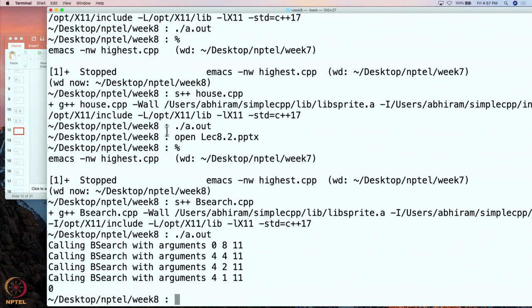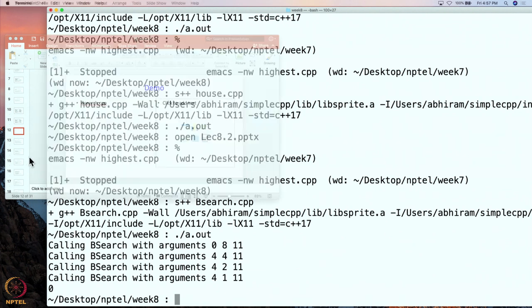So this is how bsearch ran. First it was called with argument 0, 8, 11, and of course the argument A is there but I am leaving that out, then 4, 4, 11, then 4, 2, 11, then 4, 1, 11. And if you see what we executed this was exactly the sequence and even here 0 was written as happened in our execution sequence, the execution that we did by hand as well. So let us move on to the presentation.